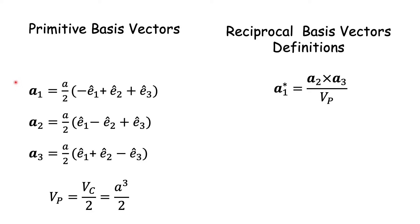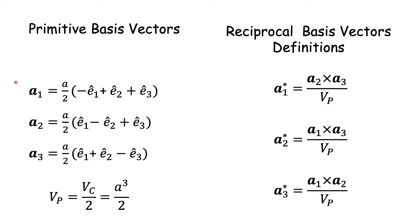The reciprocal basis vectors are defined as: a1* = (a2 × a3) / Vp, with similar expressions for a2* and a3*. These reciprocal basis vectors are defined in terms of the primitive unit cell vectors a1, a2, and a3. That is why it was necessary to first find the primitive unit cell of the original BCC conventional unit cell.